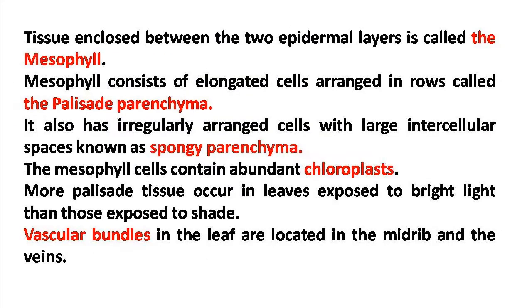After the epidermis, the next layer below the upper epidermis is the mesophyll. Mesophyll tissues are of two types: palisade parenchyma and spongy parenchyma. Palisade parenchyma consists of elongated cells arranged compactly with no intercellular space. Spongy parenchyma is irregularly arranged and has many intercellular spaces — that is why it is called spongy parenchyma. Palisade parenchyma is found on the upper surface of the leaf.